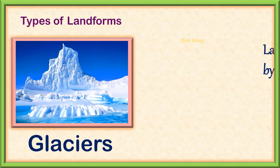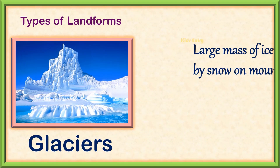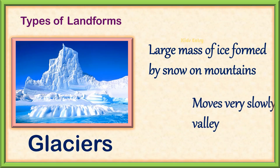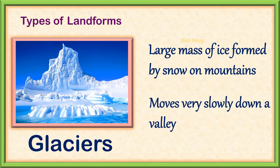Glaciers. A large mass of ice formed by snow on mountains that moves very slowly down a valley is called a glacier.